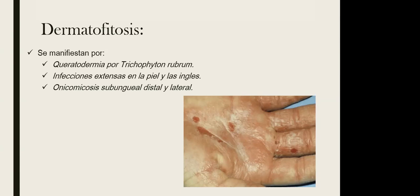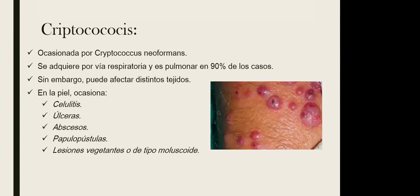La criptococosis es ocasionada por Cryptococcus neoformans. Por lo general se adquiere por vía respiratoria y ocasiona síntomas pulmonares. Las lesiones cutáneas son úlceras, abscesos o papulopústulas que pueden llegar a presentar lesiones vegetantes con necrosis o de tipo moluscoide. Esta enfermedad suele ser muy agresiva en los pacientes con VIH.